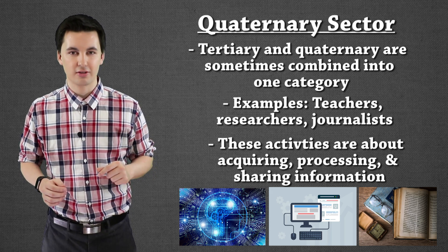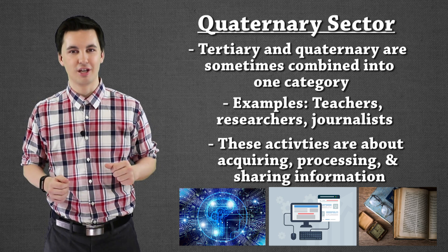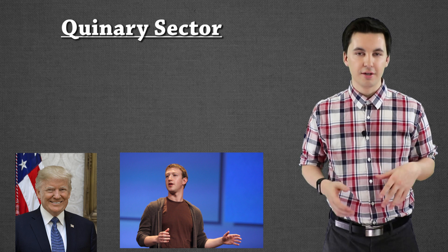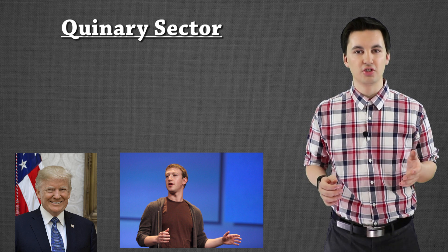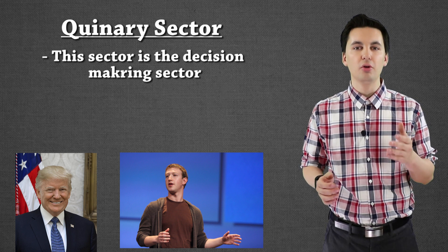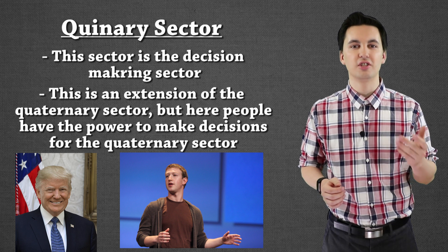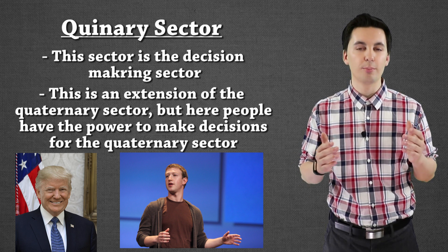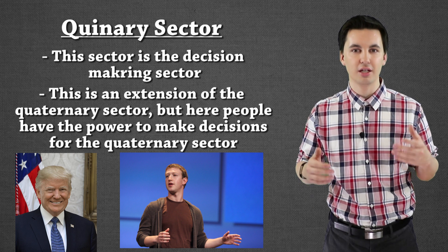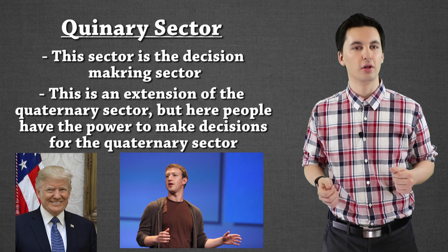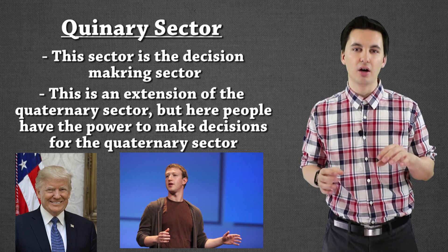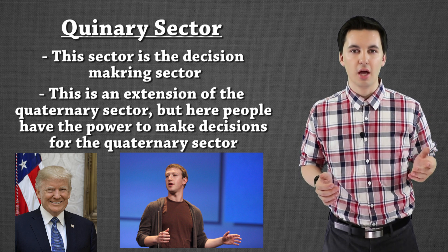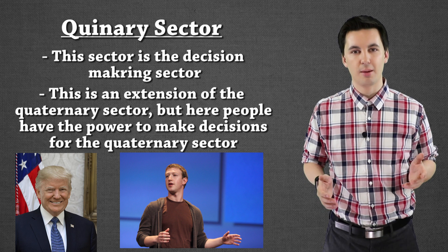Our last economic sector is the quinary sector. This sector is all about decision-making and leadership. People who fall under this category include CEOs and the President of the United States — this is the part of the economy making the decisions, setting the rules. It's an extension of both the quaternary and tertiary sectors.